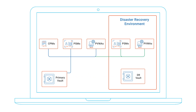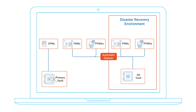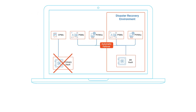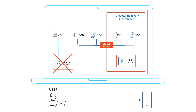The PVWAs and PSMs can be configured to automatically failover to the DR vault in case the primary vault fails. This allows end users to maintain secure access to critical systems via CyberArk without human intervention.